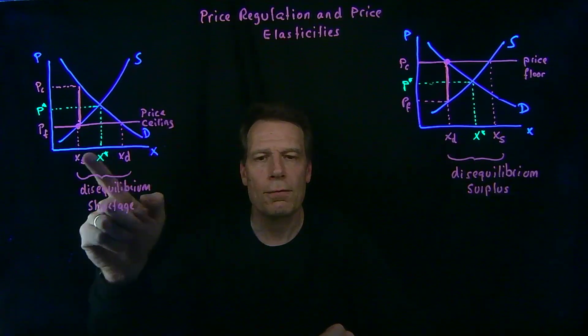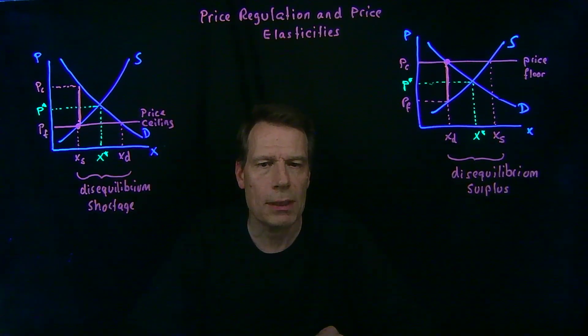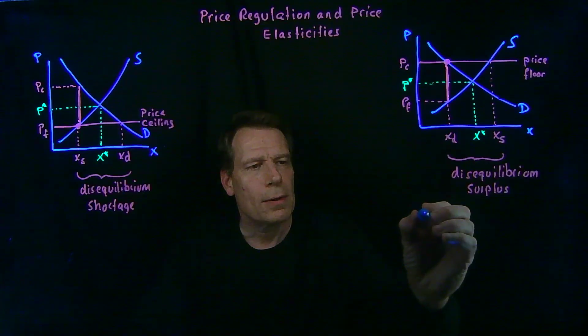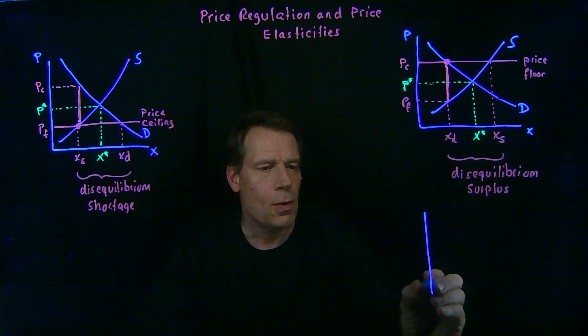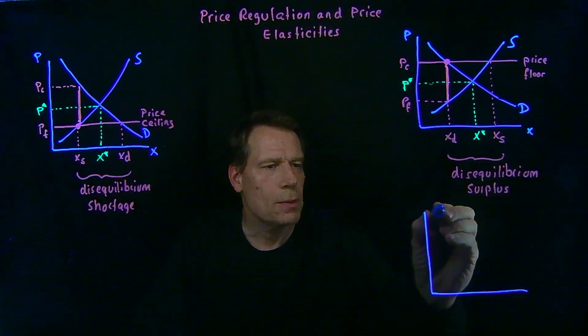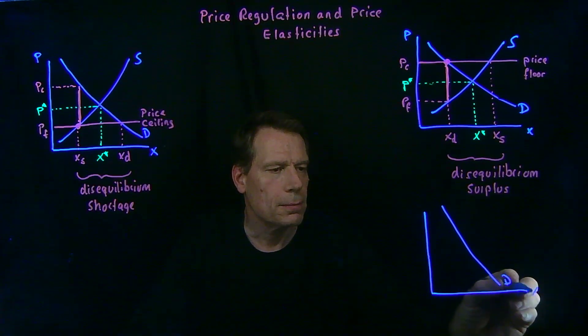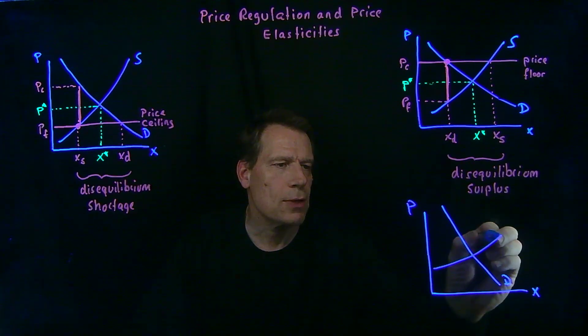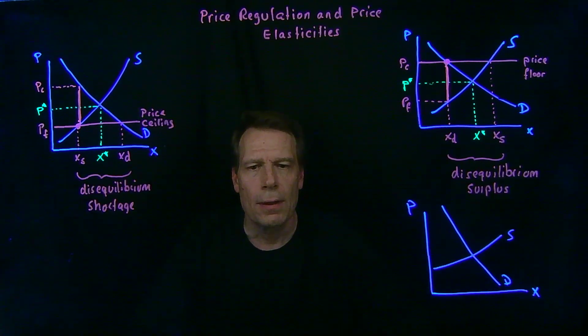And then read off of those graphs what your conclusions would be. For example, if I asked you, how are things affected when we assume that the consumers are relatively unresponsive and firms are relatively responsive to price changes, and a price ceiling is imposed?